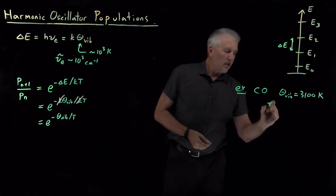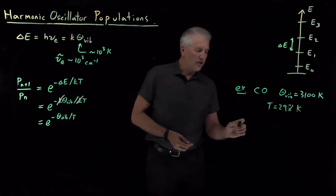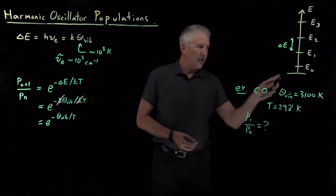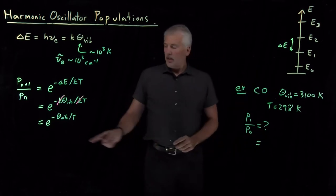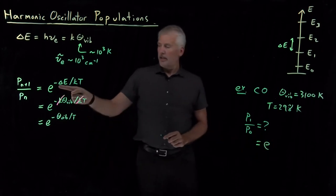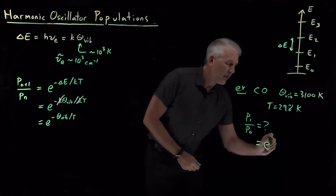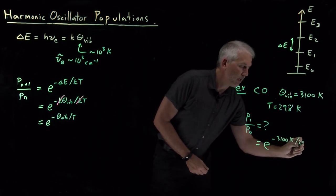If we are at a temperature of 298 Kelvin, and we want to know the probability of being in state one relative to the probability of being in the ground state, the zeroth state, that's going to be this formula we've just calculated: E to the minus delta E over KT, or E to the minus vibrational temperature divided by actual temperature, E to the minus 3100 Kelvin over 298 Kelvin.